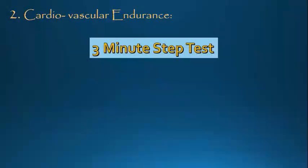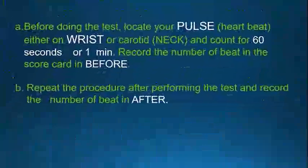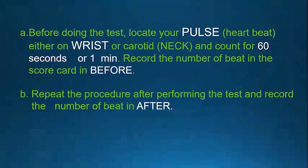The most related component is cardiovascular endurance. The activity you need to do is the 3-minute step test. You can use any similar step available in your area, but it should be 12 inches high. Before doing the test, locate your pulse either on the wrist or neck and count for 60 seconds. Record the number of beats in the scorecard under 'before.' Repeat this procedure after performing the test and record the number of beats under 'after.'